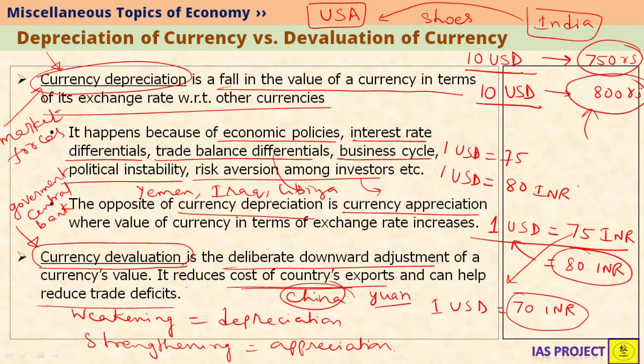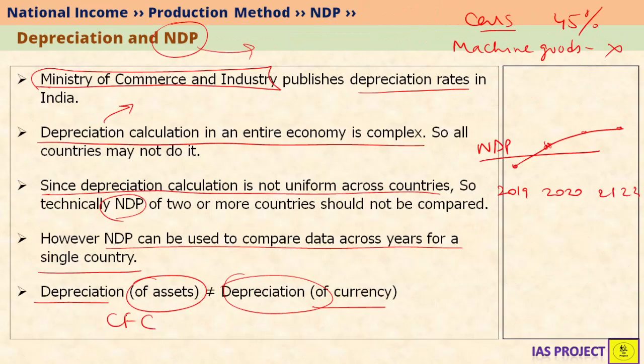To summarize: depreciation happens because of market forces and is not a deliberate action, whereas devaluation happens because of government or central bank intervention and is a deliberate action. Depreciation of assets is also different from depreciation of currency.